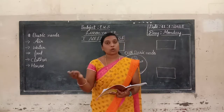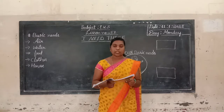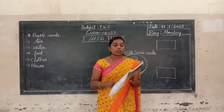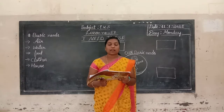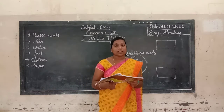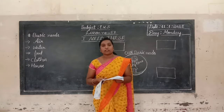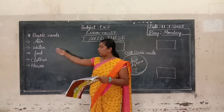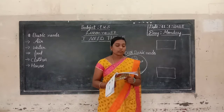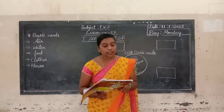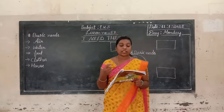Open your US textbook page number 83. Lesson number 30. Which ones do we read? We read air, water, food, clothes, and house. In this lesson we will learn about the basic needs of our life.